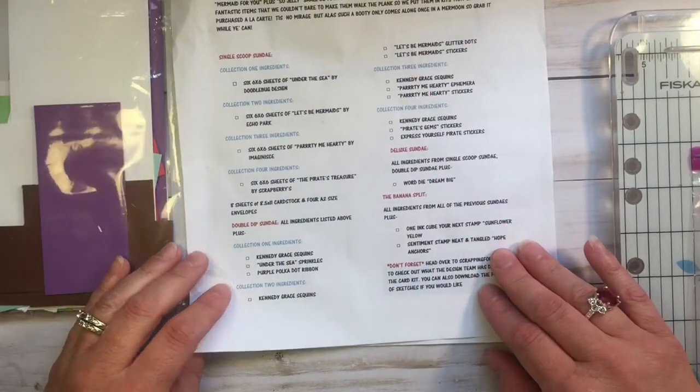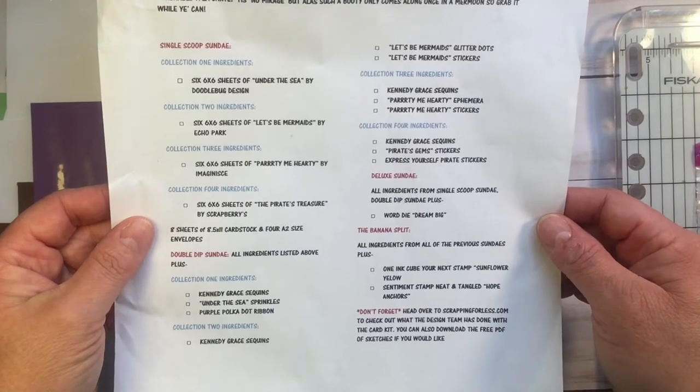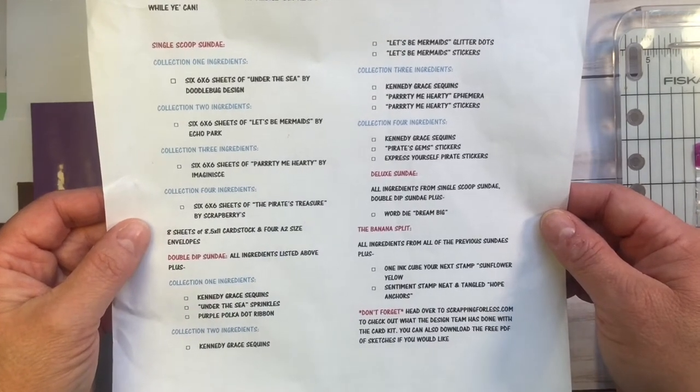There are four levels. There's the single scoop, the double dip, sundae, the deluxe sundae, and the banana split.